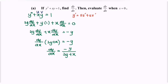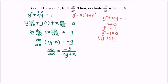The question also asks us to evaluate dy/dx when x is equal to 0. Focusing on the function y squared plus xy equals 1, if x is 0, then y squared equals 1. So y squared minus 1 equals 0, which factors as (y minus 1)(y plus 1) equals 0. The values of y are y equals 1 and y equals negative 1 when x equals 0.